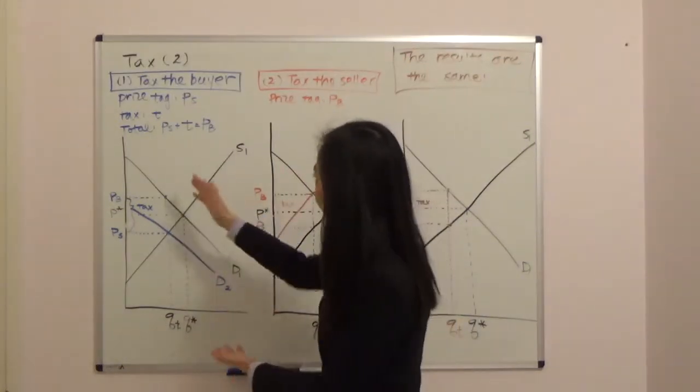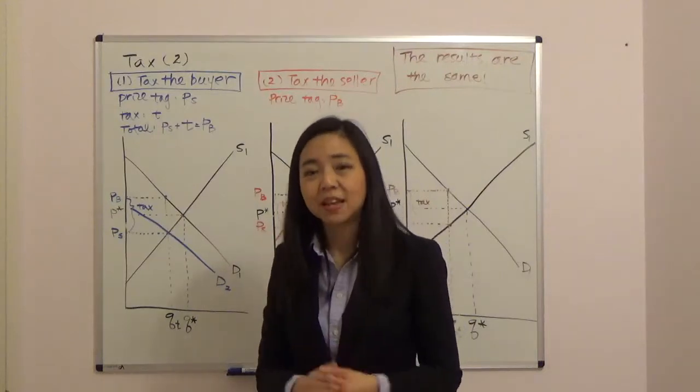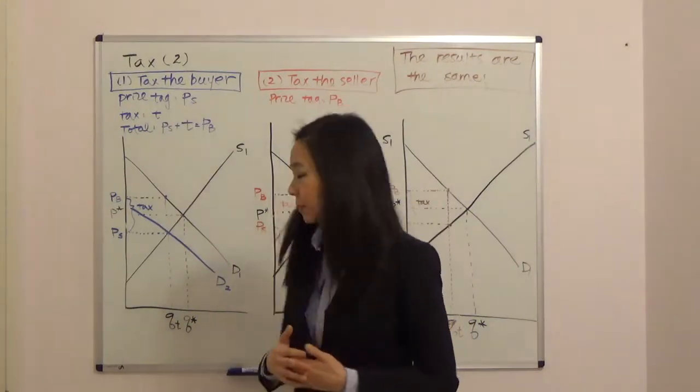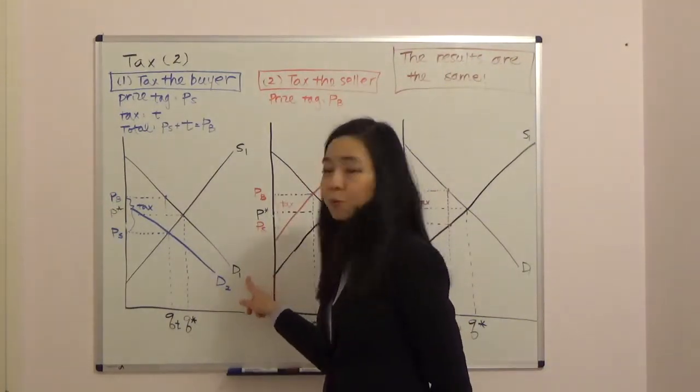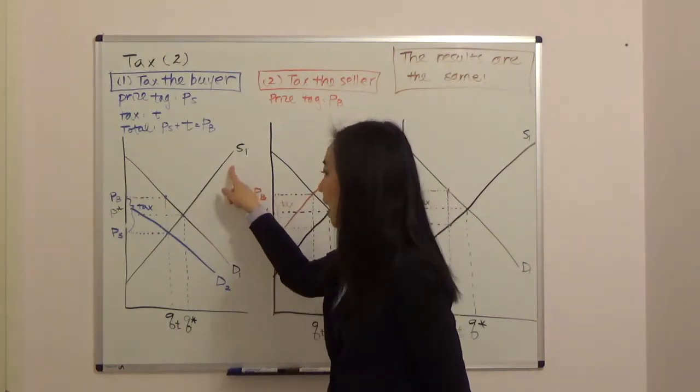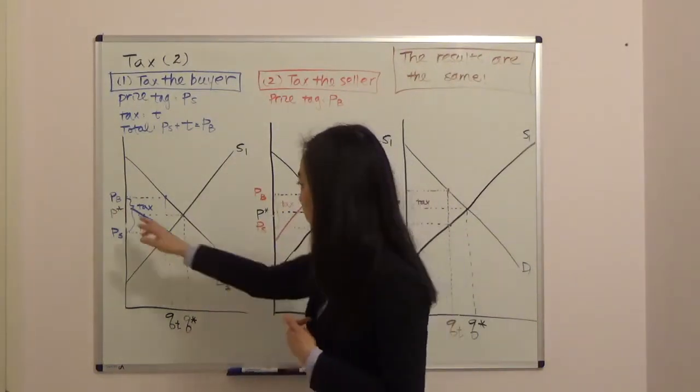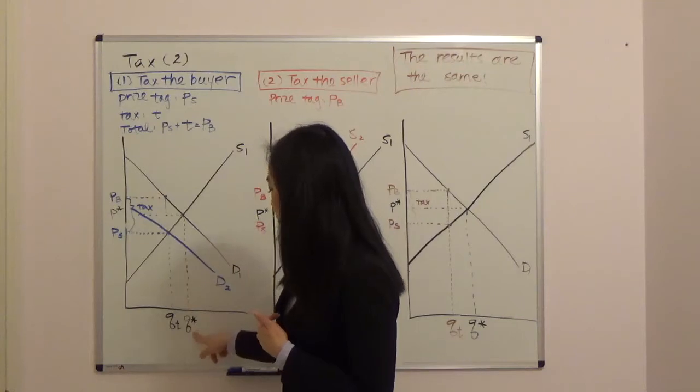So we start with our first case, the government tax the buyer. Now we know before tax, the demand is D1, supply is S1. And their intersection is price P star and quantity Q star.